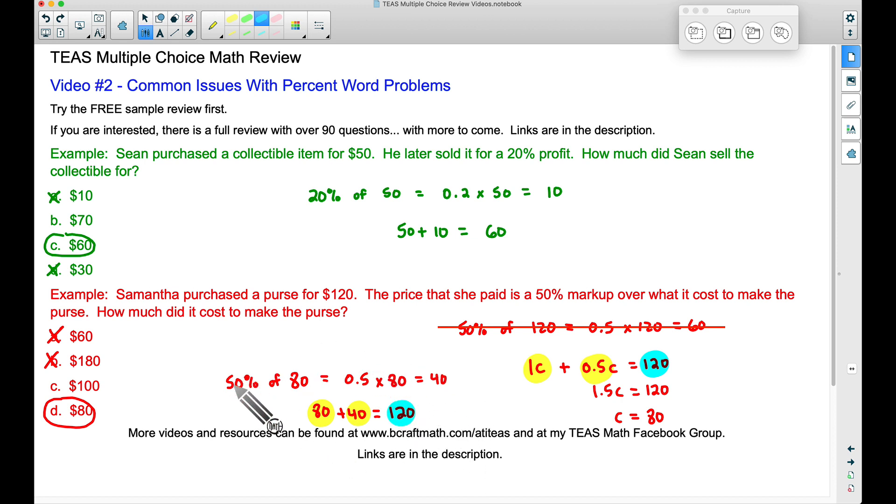So this here was a multiple choice tip where we kind of worked backwards to get the answer, whereas here is an algebraic approach. Either way works, this is probably the quickest way on a multiple choice test, but you have to practice these. Knowing when to multiply by a percentage versus when not to multiply by a percentage, the only way you're going to get good at that is to practice. And with that said, I would highly encourage you to try out that full review.